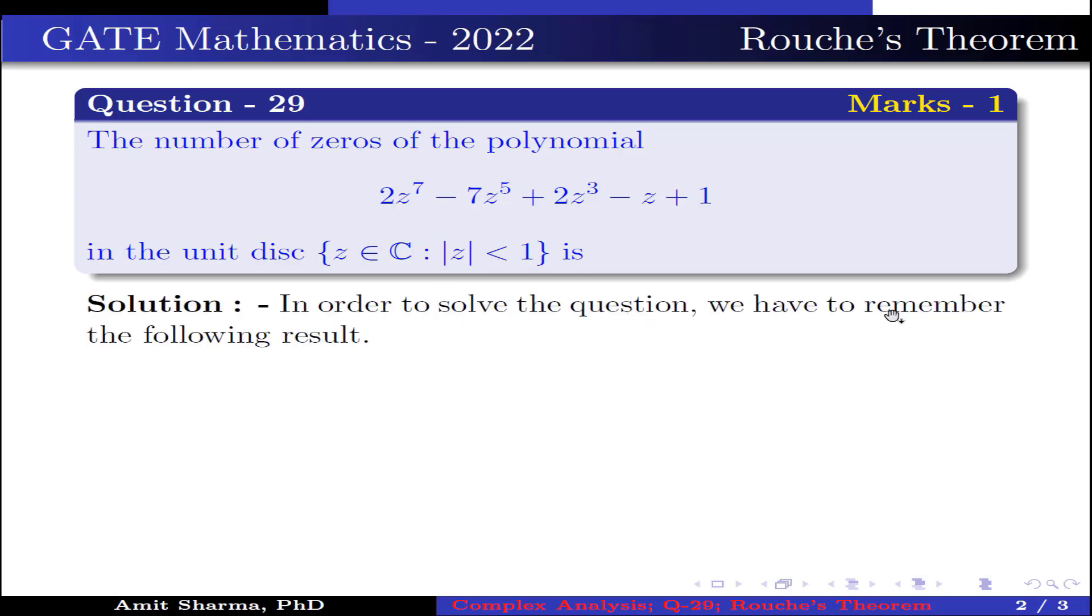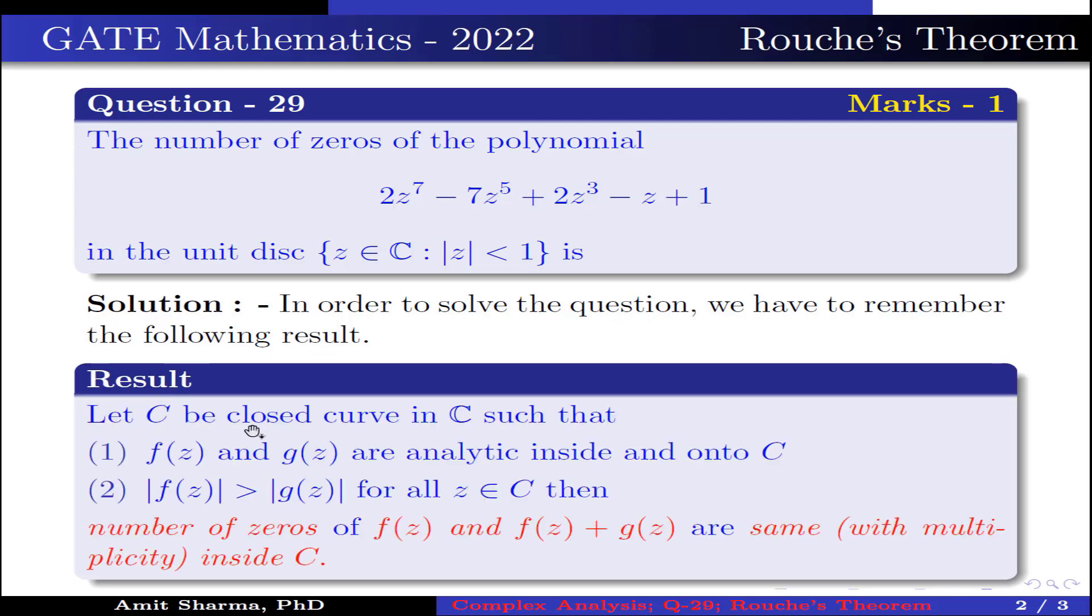In order to solve the question, we have to remember the following result. Let C be a closed curve in the complex plane such that: Point 1, f(z) and g(z) are analytic inside and on C.